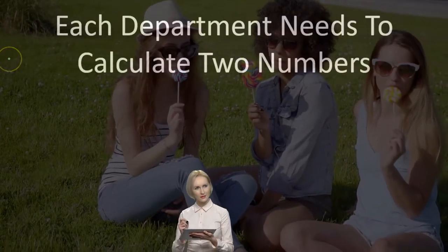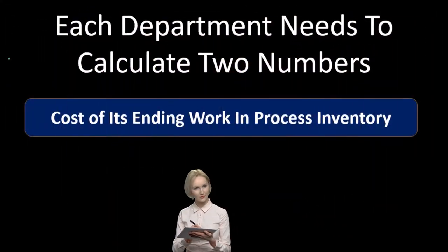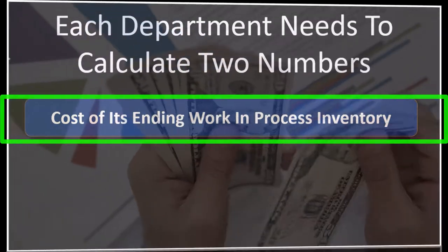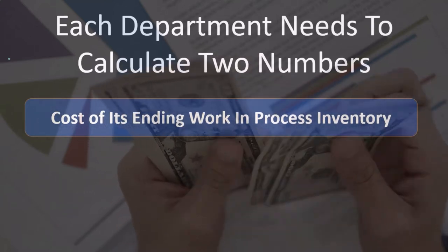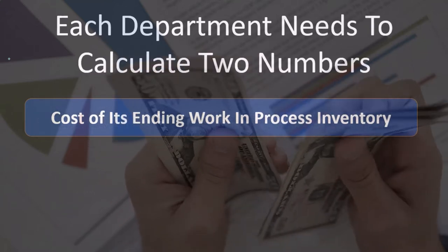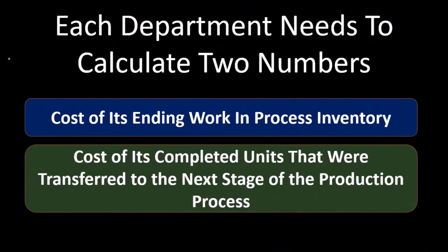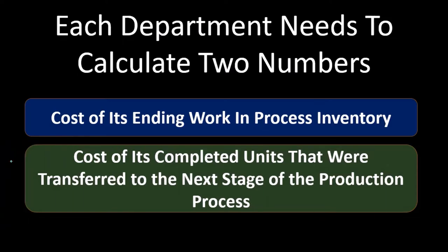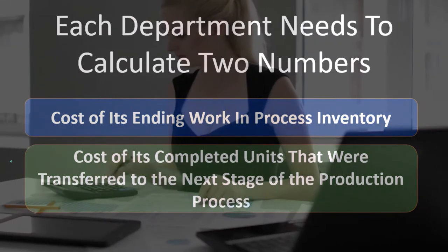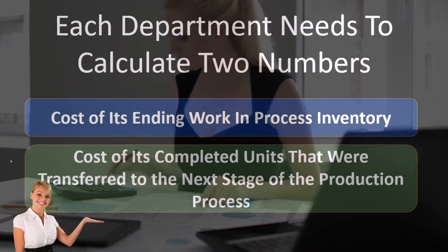Each department — in our case department A and department B — must calculate two numbers. One is the cost of its ending work in process inventory: what is still in the work in process at the end of the time period, not yet completed and not moved out. The other is the cost of its completed units that were transferred to the next stage of the production process. This isn't straightforward because the units are not totally complete.